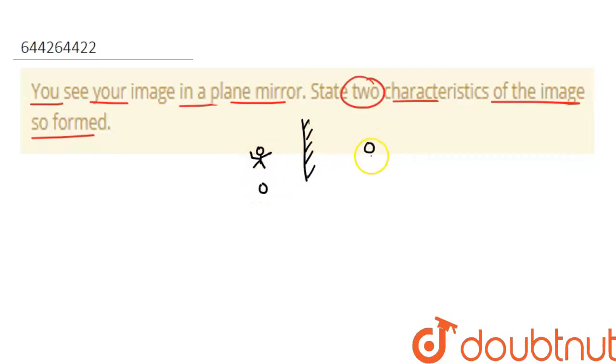And our image is identical. This is our image. The distance is the same. Let's suppose this is 2m distance, so the image will also be at 2m distance.